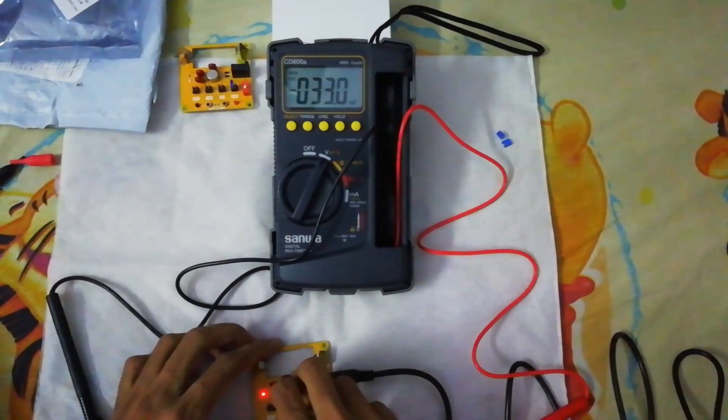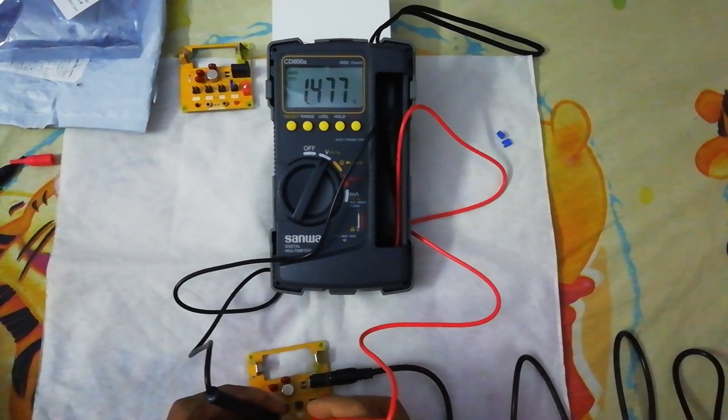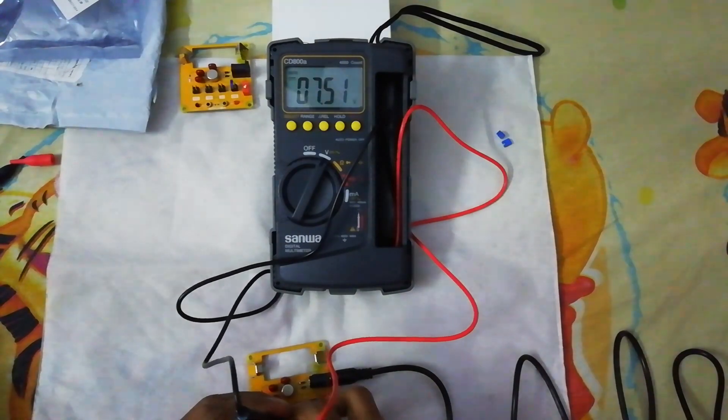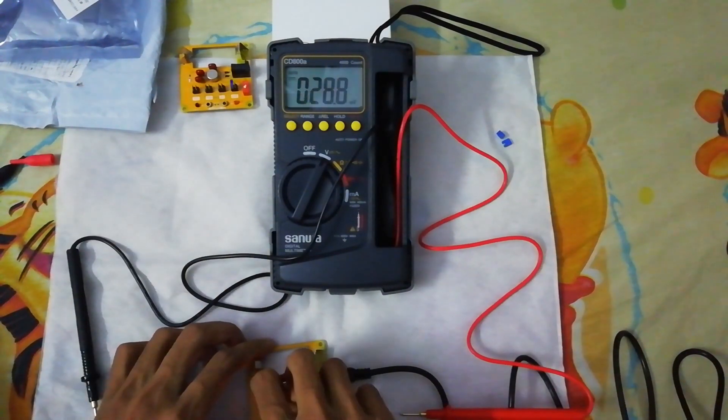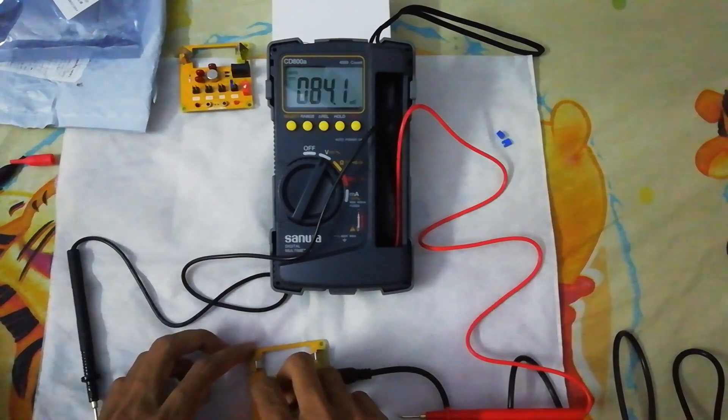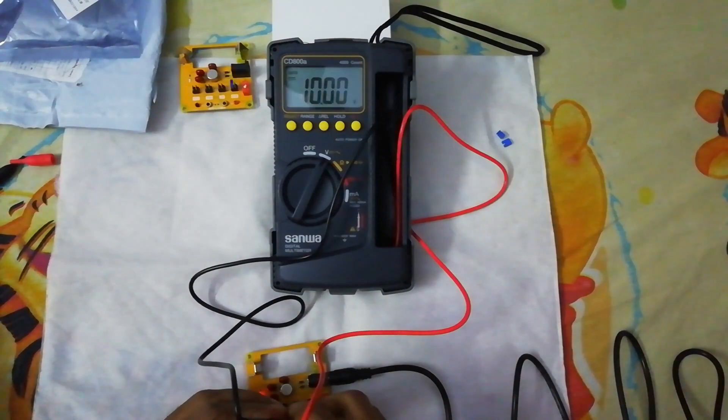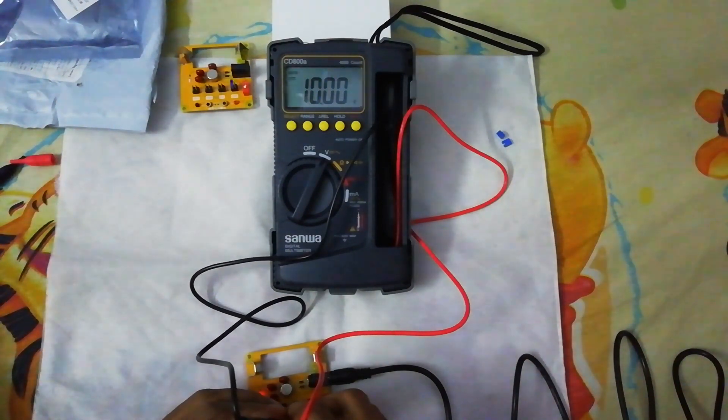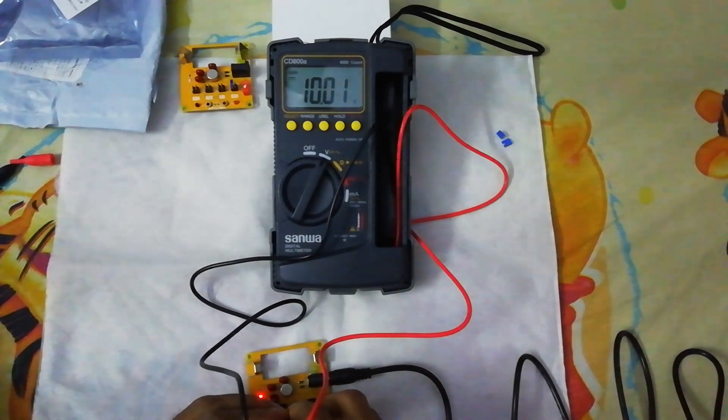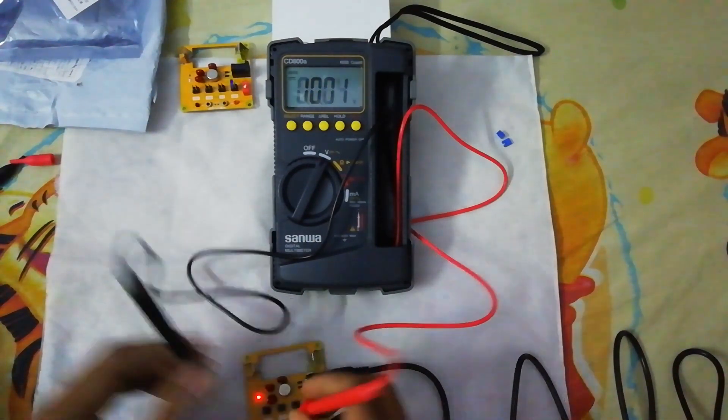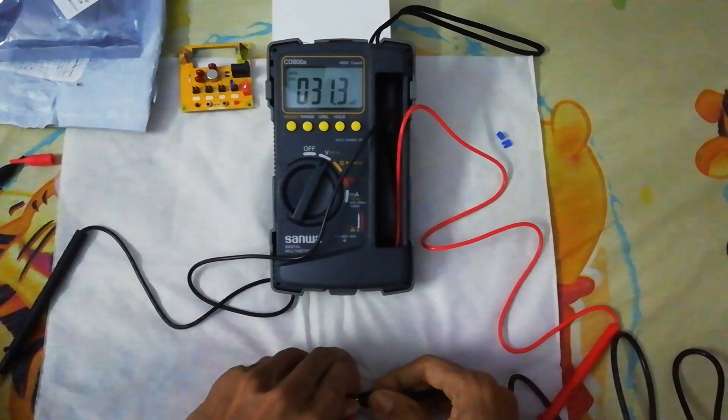Now for 7.5 volts we have 7.50 exactly, it's almost bang on. So this one is more accurate than the other. Then 10.00, we have got 10.00 bang on, it's spot on. 10.01, 10.00, yeah it's spot on. This one is more accurate, this one is pretty much accurate than the other one.